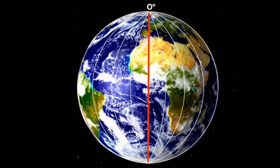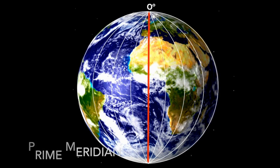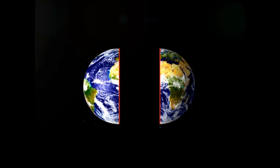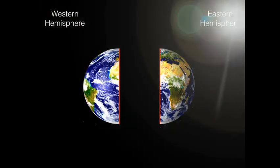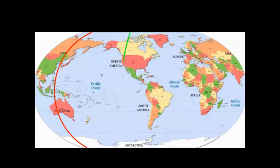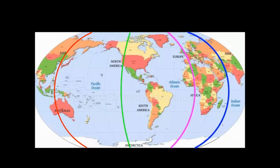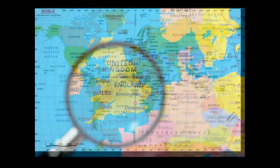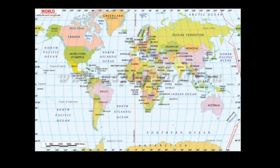The most important longitude line is called the Prime Meridian and is located at longitude zero degrees. It separates the Earth into western and eastern hemispheres. Did you know that a long time ago, many countries had their own Prime Meridian? In 1884, a group of scientists, navigators and businessmen made Greenwich, England, the official worldwide meridian.